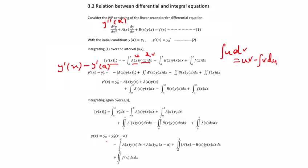Now we are going to see the relation between differential and integral equations. Consider a second order differential equation, which is equation 1, with the initial conditions in equation 2. Now we are going to reduce this equation into an integral equation. For that, you have to iterate. So iterating over the integral from a to x.